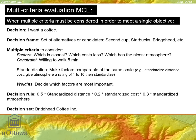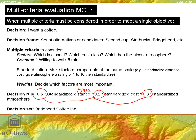We could standardize the atmosphere by rating preference for each coffee store. Then you decide what's more important: is atmosphere more important, cost, or distance? You could say distance — or time — is most important and give it a weight of 0.5, then 0.2 to cost, and 0.3 to atmosphere. These add up to one: 0.5 + 0.2 + 0.3 = 1. You multiply those values together to get the decision set.